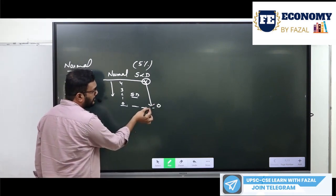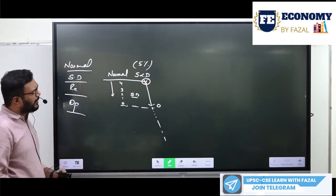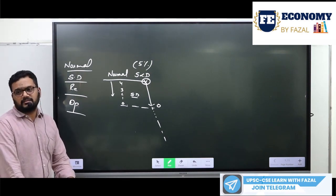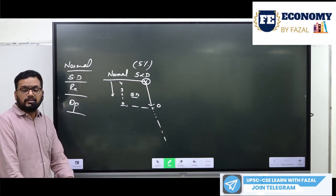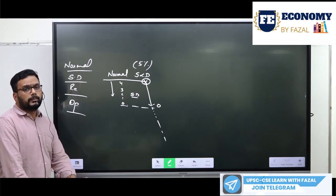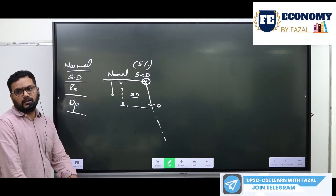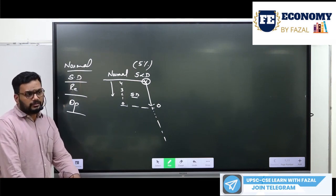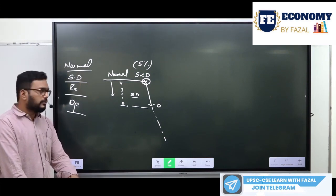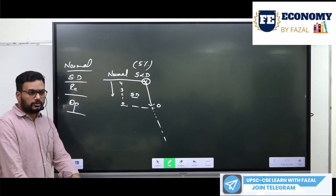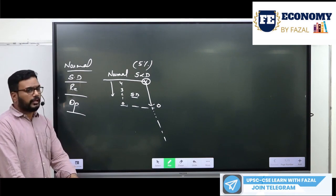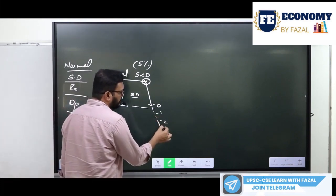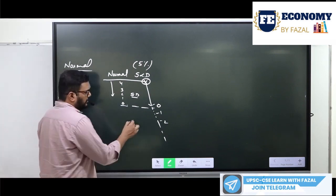From 0, the growth rate will fall further because supply and demand are not in a position to meet — there is no demand and no supply. For example, in the case of COVID, there was no demand, and eventually supply also fell because consumers were not consuming and producers were also affected by COVID. So the growth rate falls into the negative phase — minus 1, minus 2 — and this is called a negative growth rate.